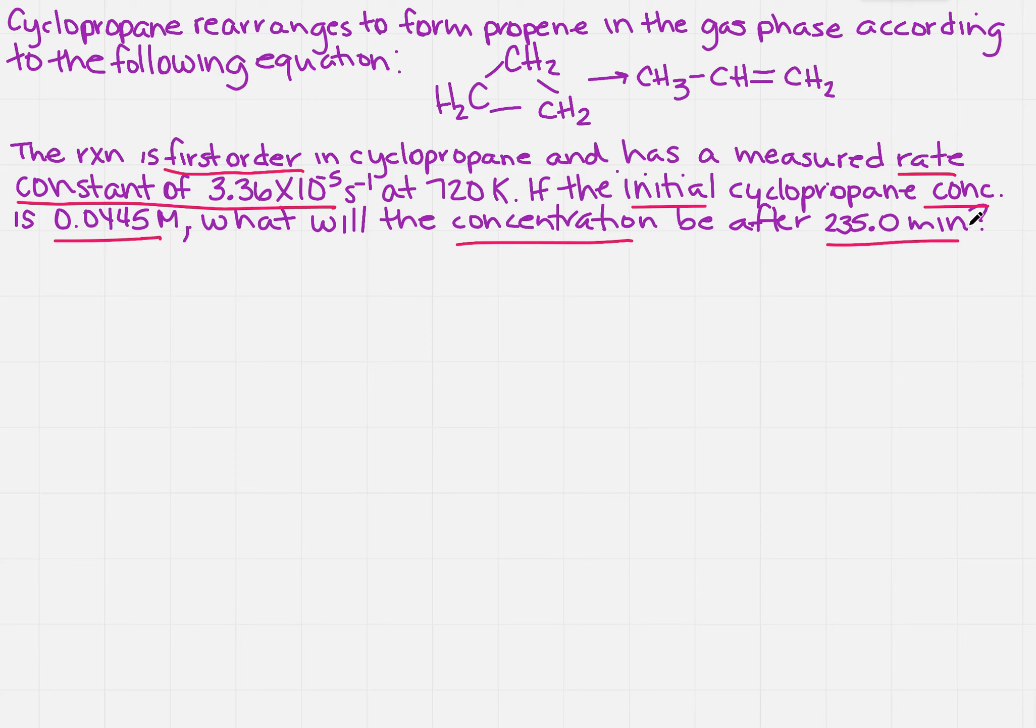So based on everything that I've underlined, I know that I'm going to need to figure out something from a first order equation. So what is the equation for first order? Well, it is the natural log of a concentration at time T equals minus the rate constant times the time plus the natural log of the initial concentration.